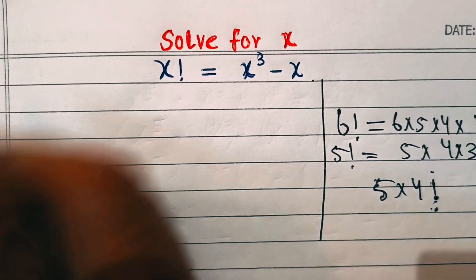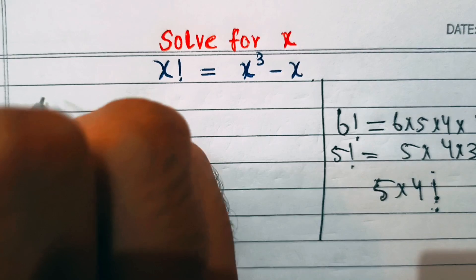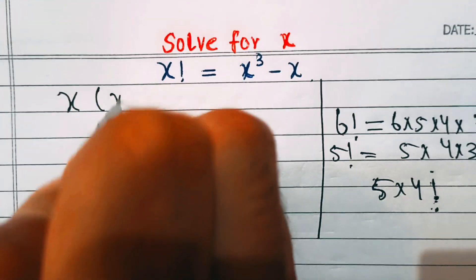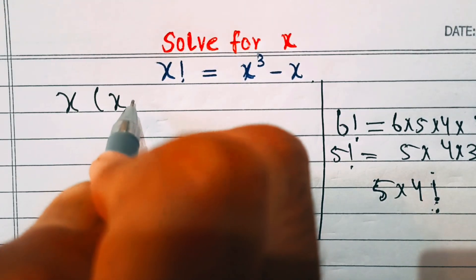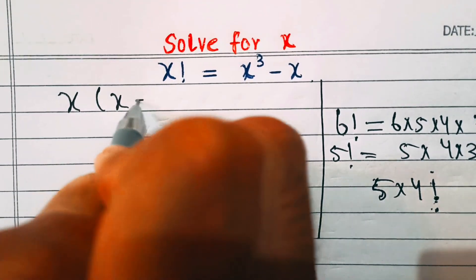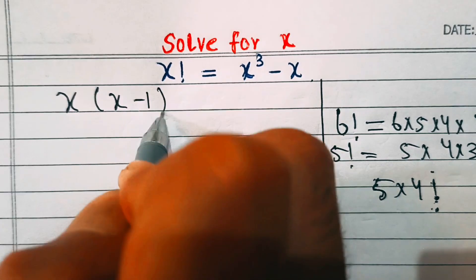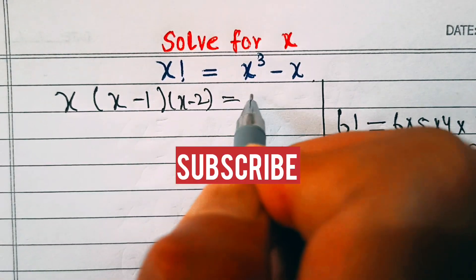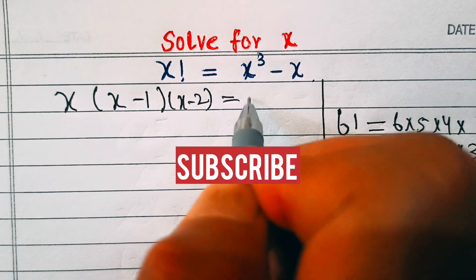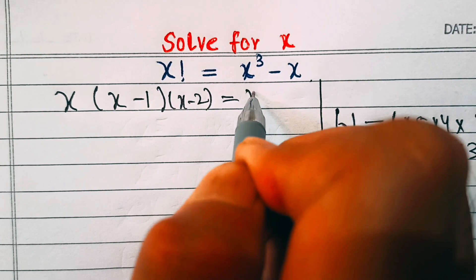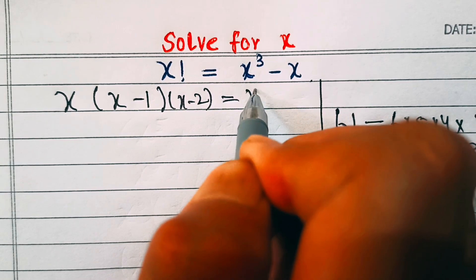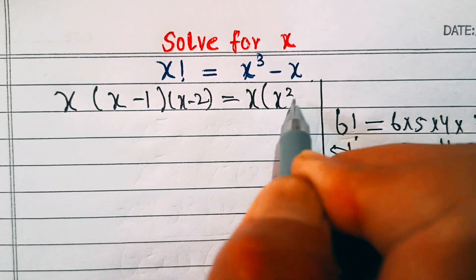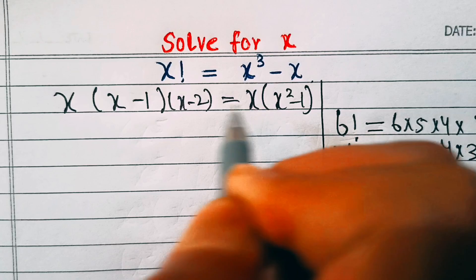Now let's come to our question. x factorial can be written as x into (x minus one) into (x minus two) and so on, equal to x cubed minus x. Taking x common on the right side gives us x into (x squared minus one).